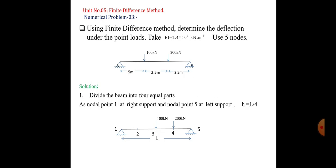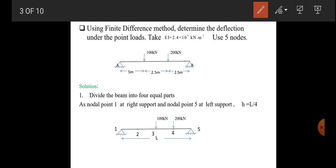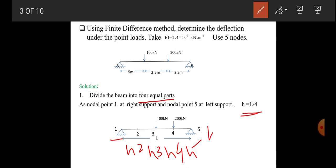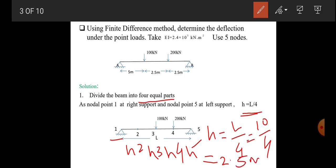For the solution, divide the beam into 4 equal parts to get 5 nodes. Assign node 1 to the right support and node 5 to the left support, with nodes 2, 3, and 4 as intermediate nodes. The beam is divided into 4 equal parts, so each interval between nodes is H, where H = L/4. The total length L is 10 m divided by 4, giving H = 2.5 m. Each node has an interval of 2.5 m.